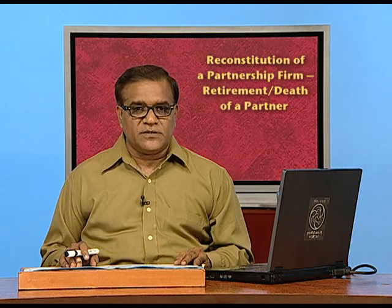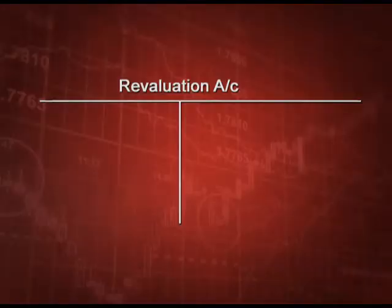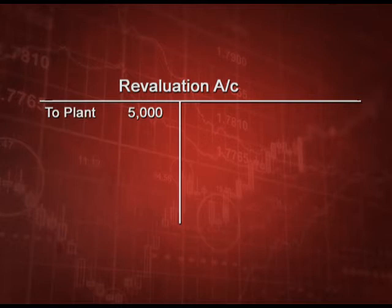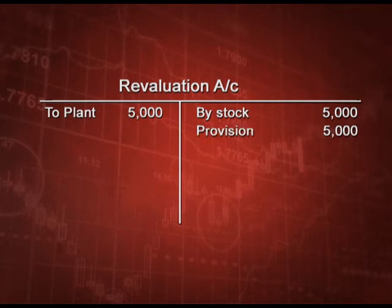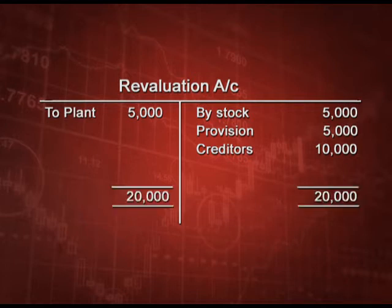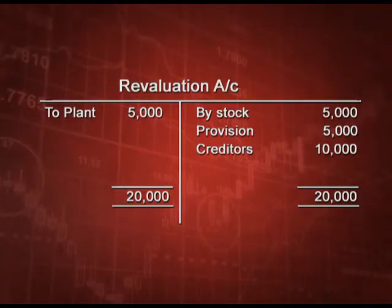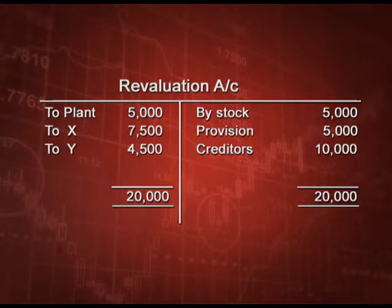Starting with the revaluation account: debit side shows depreciation of plant 5,000; credit side shows stock 5,000, provision not required 5,000, and creditors to be paid less 10,000. This gives a profit of 15,000, distributed in the old ratio 5:3:2 — X gets 7,500, Y gets 4,500, and Z gets 3,000.